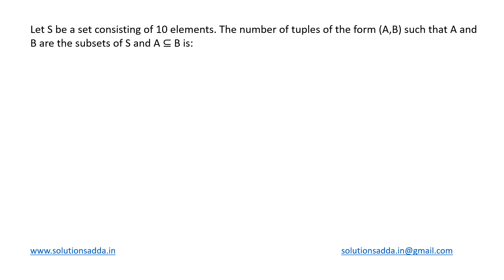This is an engineering mathematics question from set theory. We have a set S with 10 elements, so its cardinality is 10. From this set we need to find the ordered tuples of the form (A, B) such that both A and B are subsets of S.